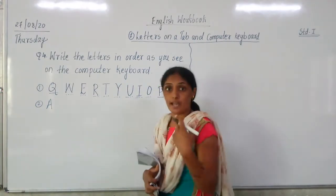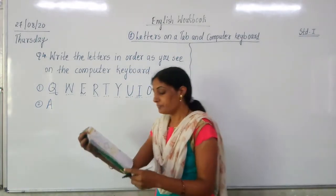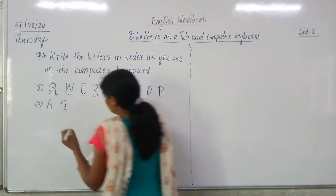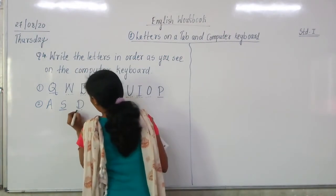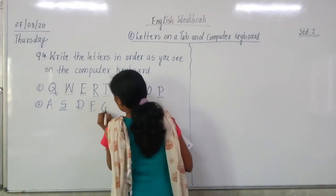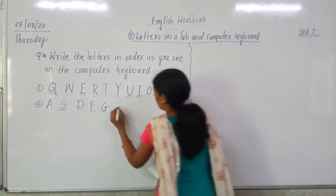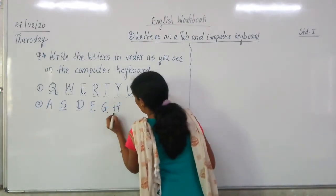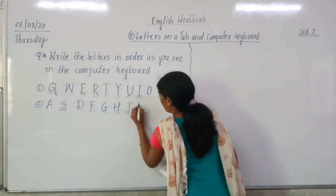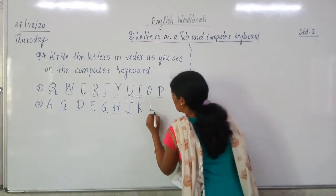It is not in alphabetical order. It is on your computer keyboard. Next one is A, then S, D, F, G. After G is H. Next one is J, then K. And the last letter on the computer keyboard second row is L.